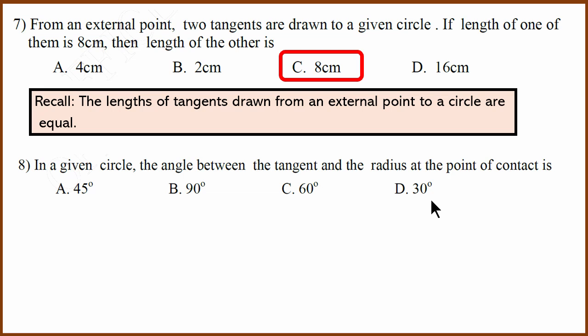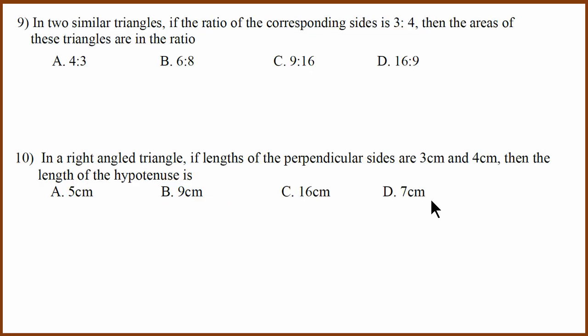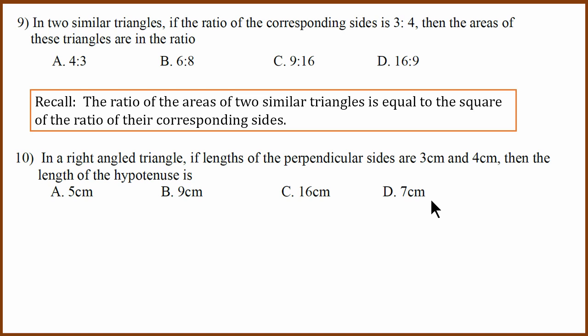Eighth question: the angle between a tangent and radius is 90 degrees. Answer B. Ninth question: in two similar triangles, if the ratio of the corresponding sides is 3 to 4, the ratio of the triangles' areas will be the square of the ratio of the corresponding sides. So 3 to 4 squared gives 9 to 16. Answer C.